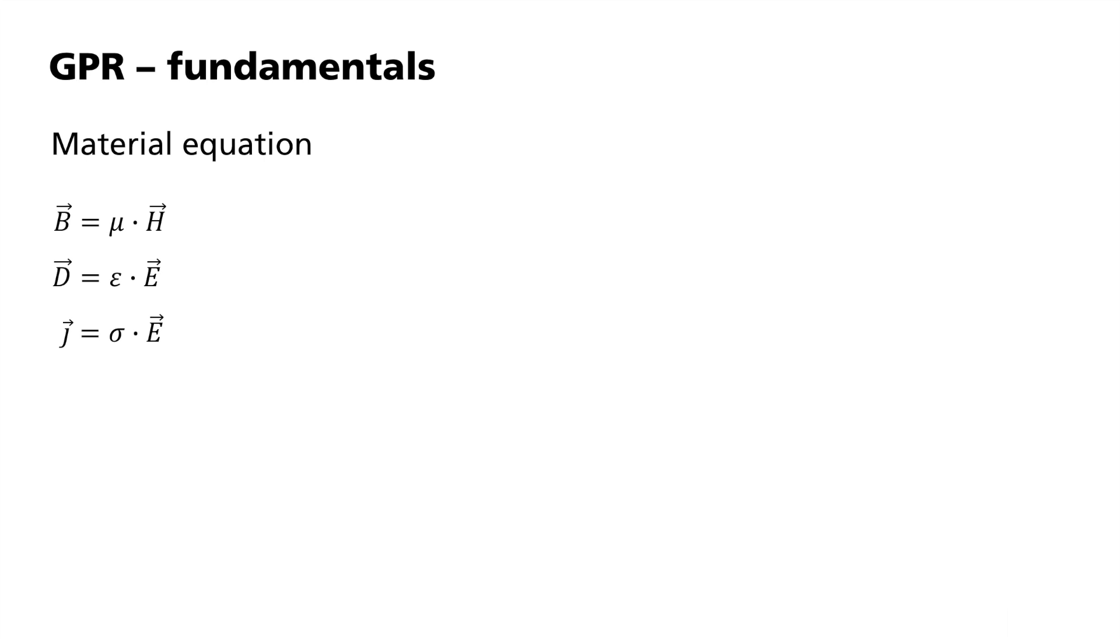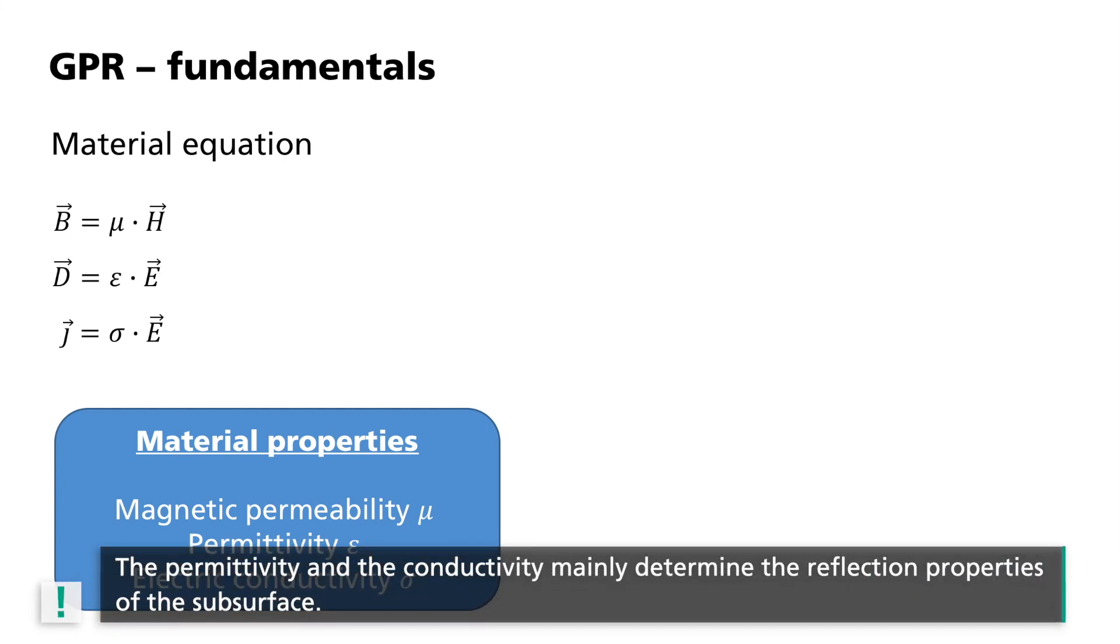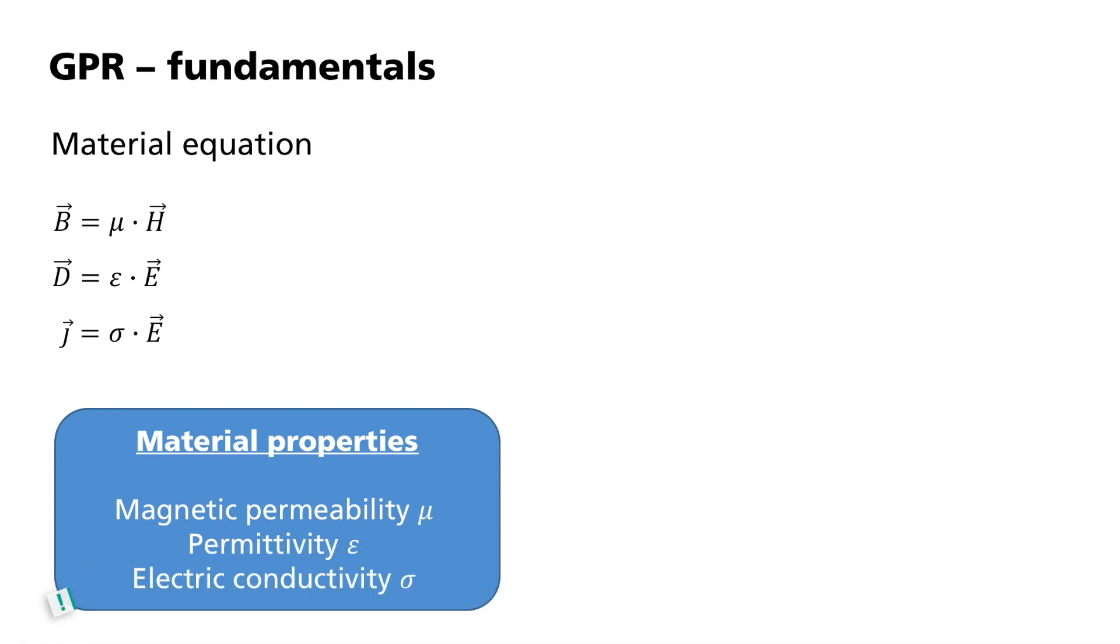In addition, there is also Ohm's law. Current density J equals conductivity sigma times the field strength E. The material equations show that the propagation of electromagnetic waves is determined by the material properties mu, epsilon and sigma. The permittivity and conductivity mainly determine the reflection properties of the subsurface and thus the contrast between subsurface layers at which the reflection takes place.